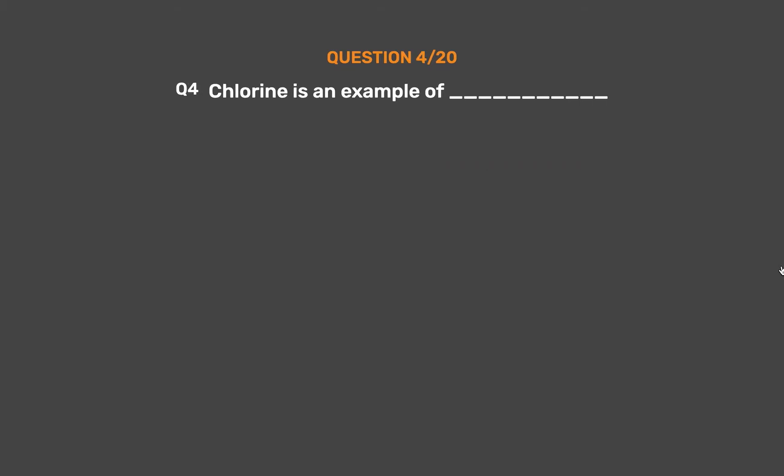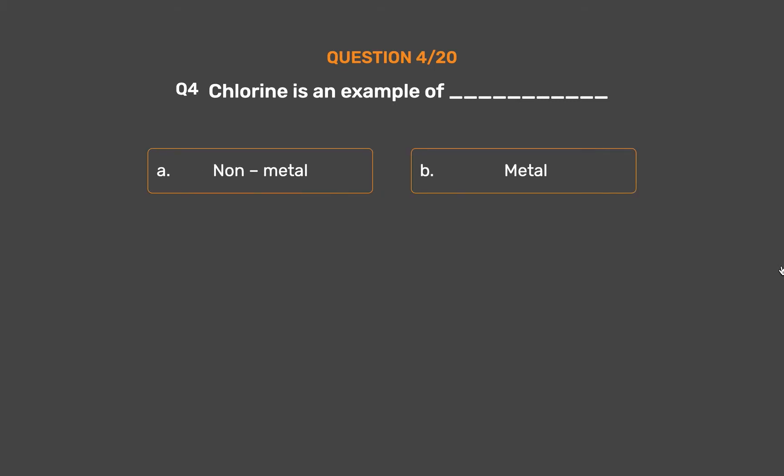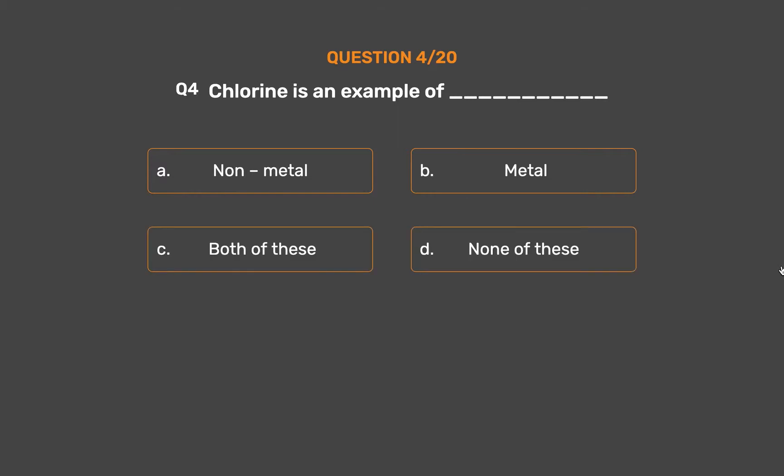Question number 4. Chlorine is an example of ___. Option A: Non-metal. Option B: Metal. Option C: Both of these. Option D: None of these.